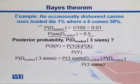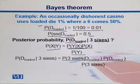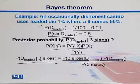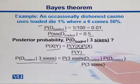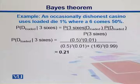We want to know the posterior probability that the die is loaded, given that we observed three sixes. Using Bayes theorem: P(D loaded | three sixes) = P(three sixes | D loaded) × P(D loaded) / P(three sixes). We fill up the equation with our data, plug in the values, and the probability comes out to 21%.